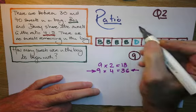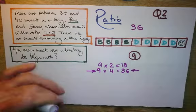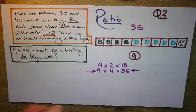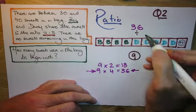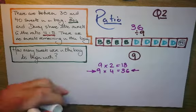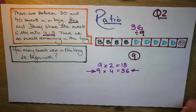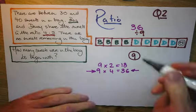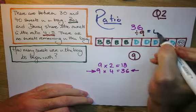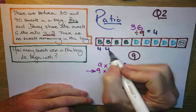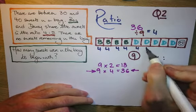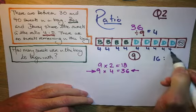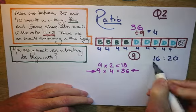Let's just see if it works. So if that's 36, I'm now going to share that by 9, and that means 4 in each one. So 36 divided by 9 is 4. So Ben will get 4 lots of 4 — 16 sweets. And Daisy will get 5 lots of 4 — 20.